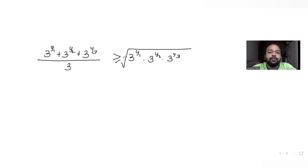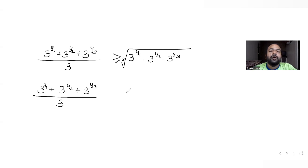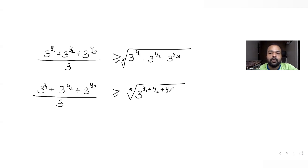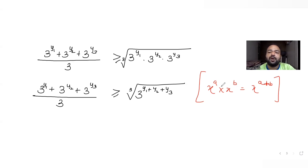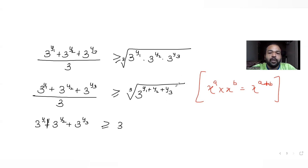Since there are three terms, we take the cube root. Using the rule of exponents — x^a · x^b = x^(a+b) — since the base is the same, we add the powers. So we get: (3^y1 + 3^y2 + 3^y3) / 3 ≥ cube root of 3^(y1 + y2 + y3).